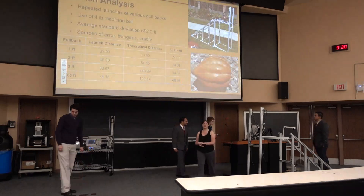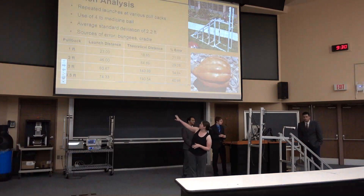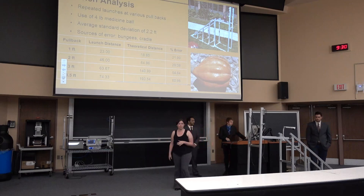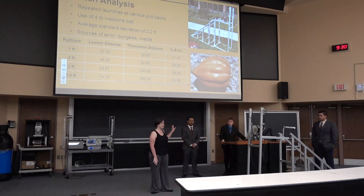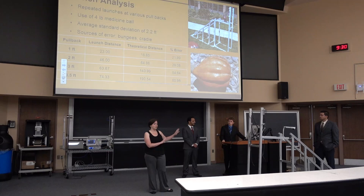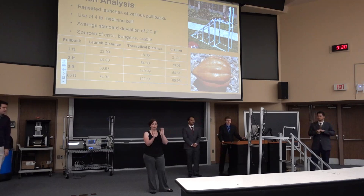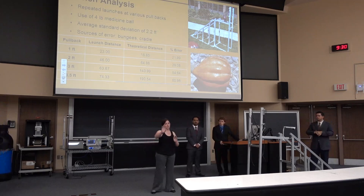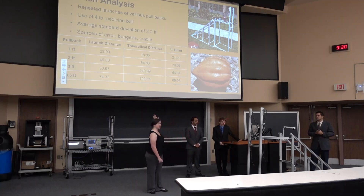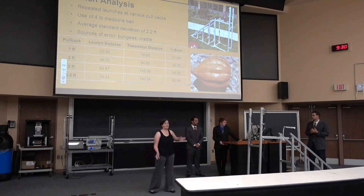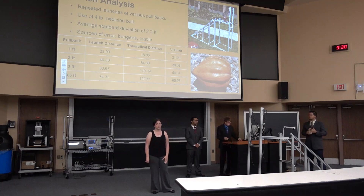Now we're going to talk about our control launches. We ran several trials at one, two, three, and three and a half feet of pullback. We have our average distances and our theoretical statistics up there with our error calculations. We believe the error was decently high because in the video you can see the latex tubing at the top caused the cradle to go slightly faster on top than on the bottom, flipping the medicine ball out before it reached its full potential and losing some potential energy. Our standard deviation was 2.2 feet, meaning we had a decent amount of accuracy — whenever we launched, we had a good chance of getting it to the exact position we wanted.